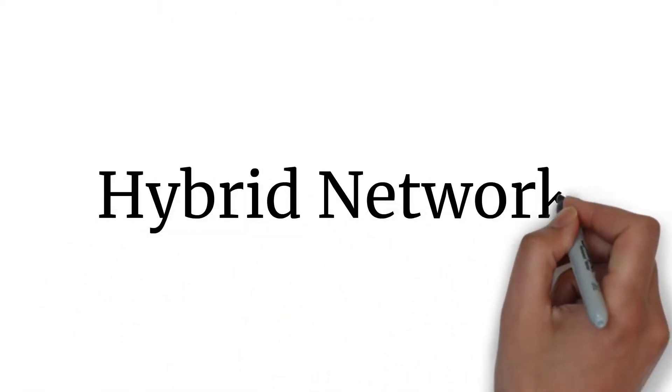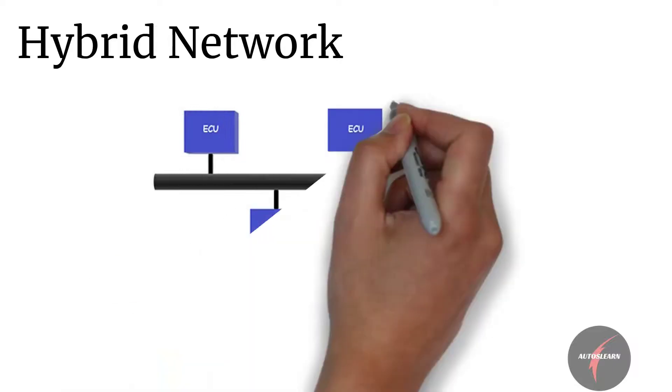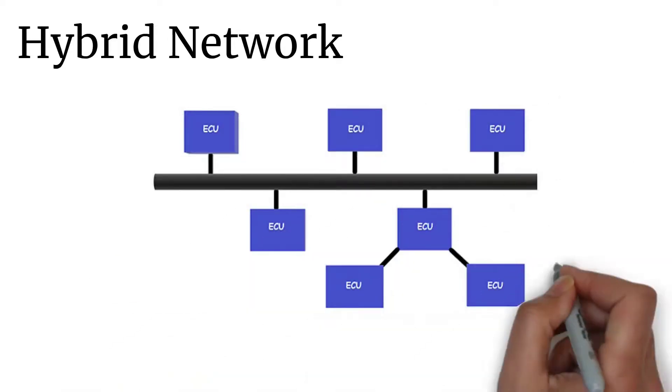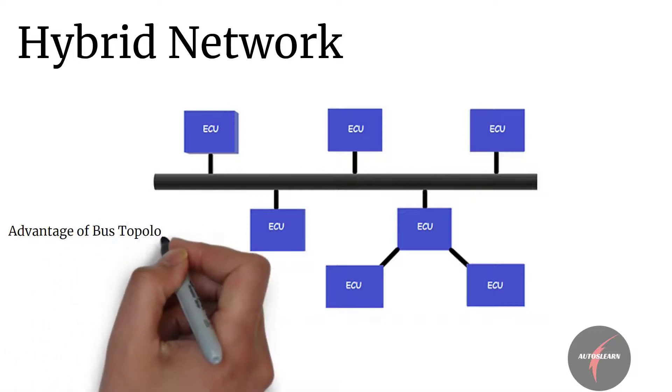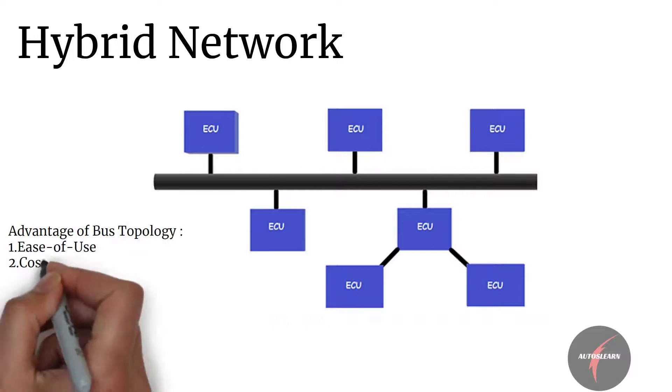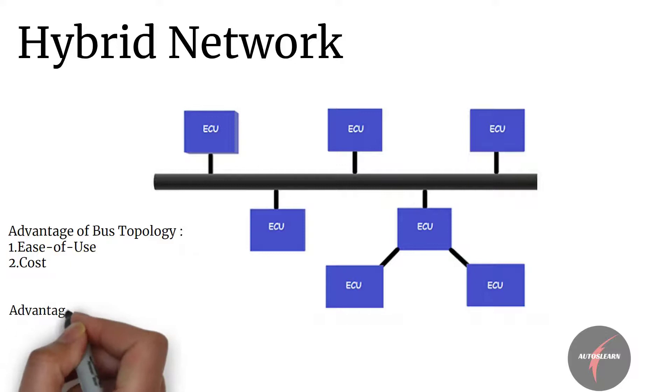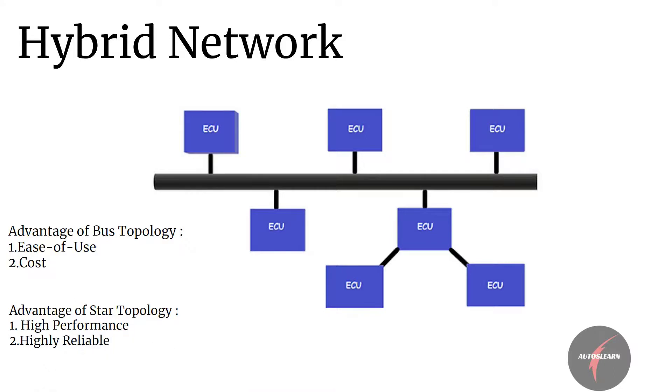We also have hybrid network where bus and star topologies are combined. Future FlexRay networks will likely consist of hybrid networks to take advantage of ease of use and cost advantage of bus topology while applying the performance and reliability of star networks where needed in a vehicle.